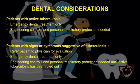Dental considerations: When a patient with active infection or a history of TB comes to the clinic — first, for a patient with active tuberculosis, only emergency dental treatment should be carried out. Engineering controls and personal respiratory protection are needed. Engineering control means use of devices that eliminate or reduce the chance of exposure to blood or saliva, with the help of rubber dam, high-volume evacuation or red bag.